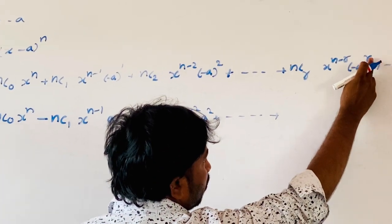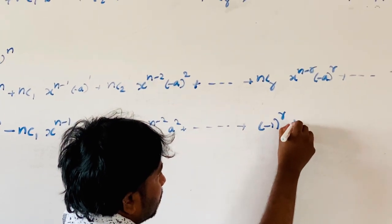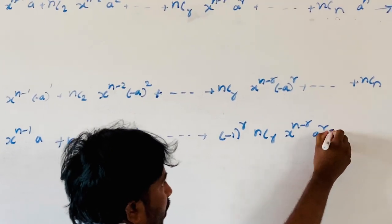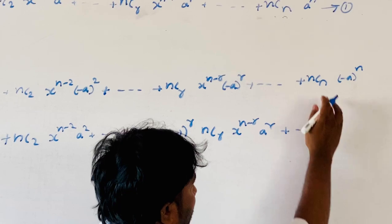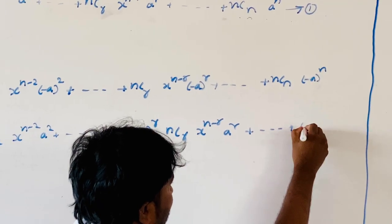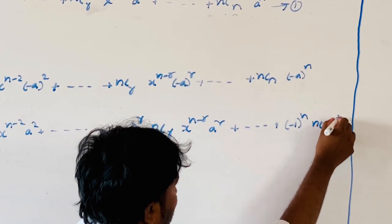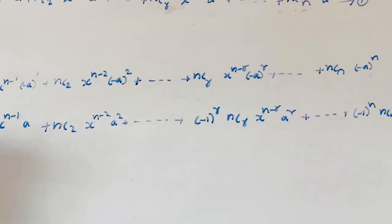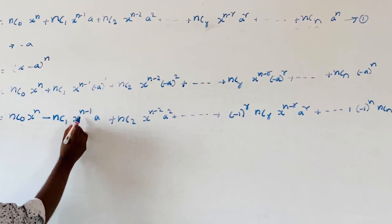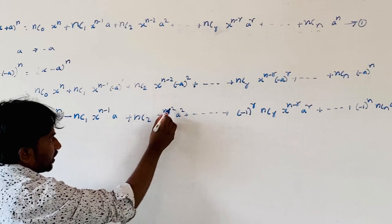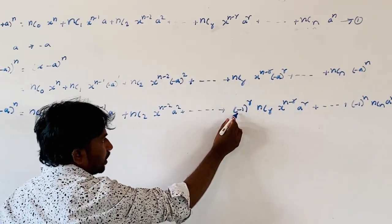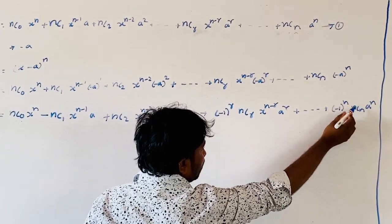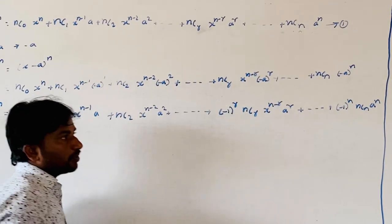Now (-a)^r means (-1)^r · a^r. So we can write the expansion as NC0·x^n minus NC1·x^(n-1)·a plus NC2·x^(n-2)·a^2 and so on, minus NCN·a^n.